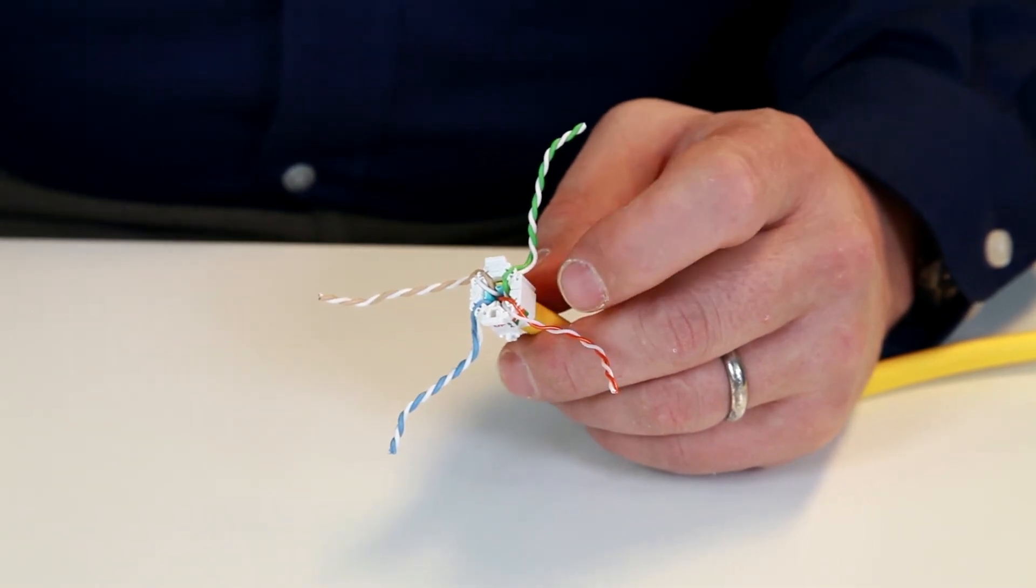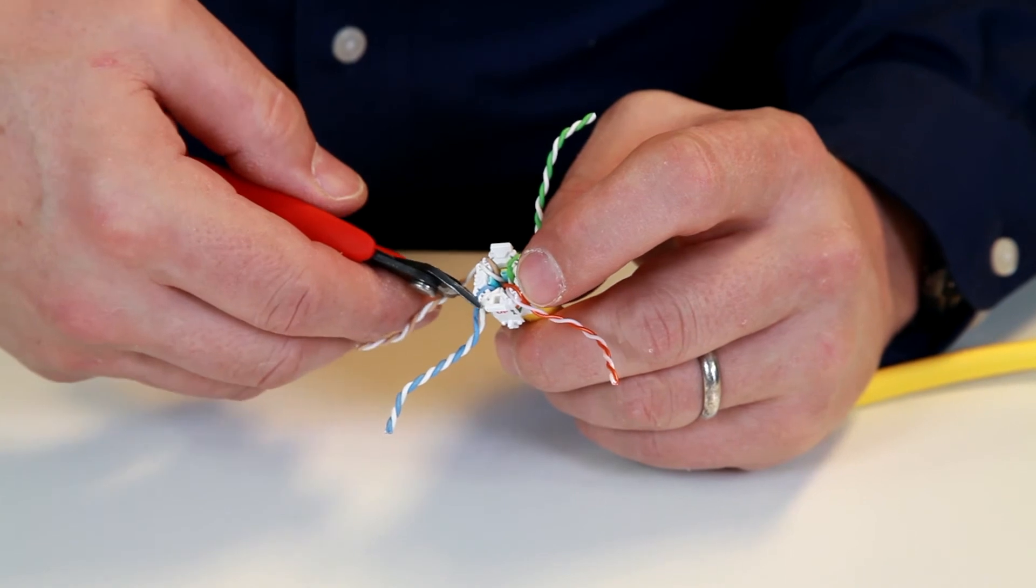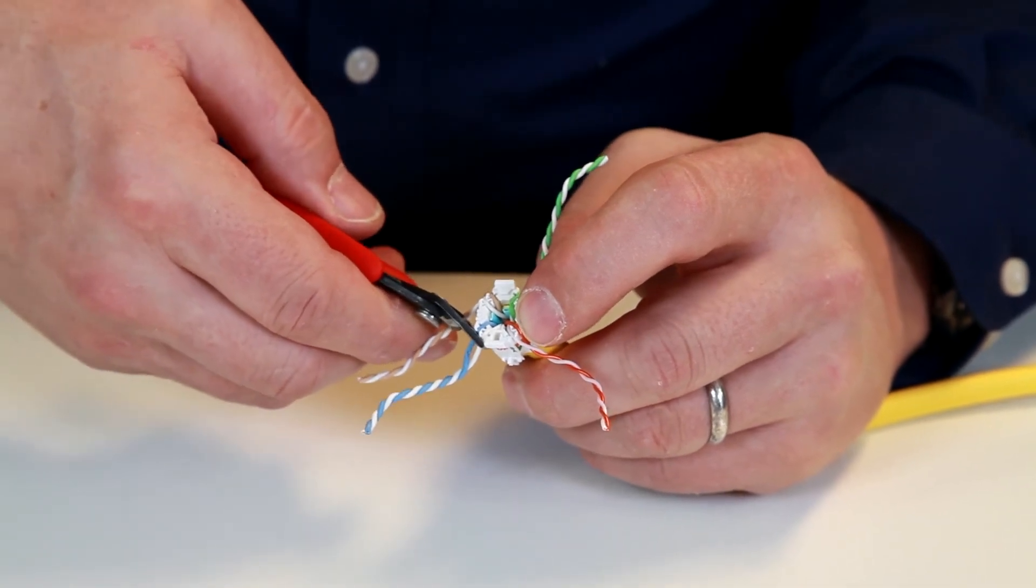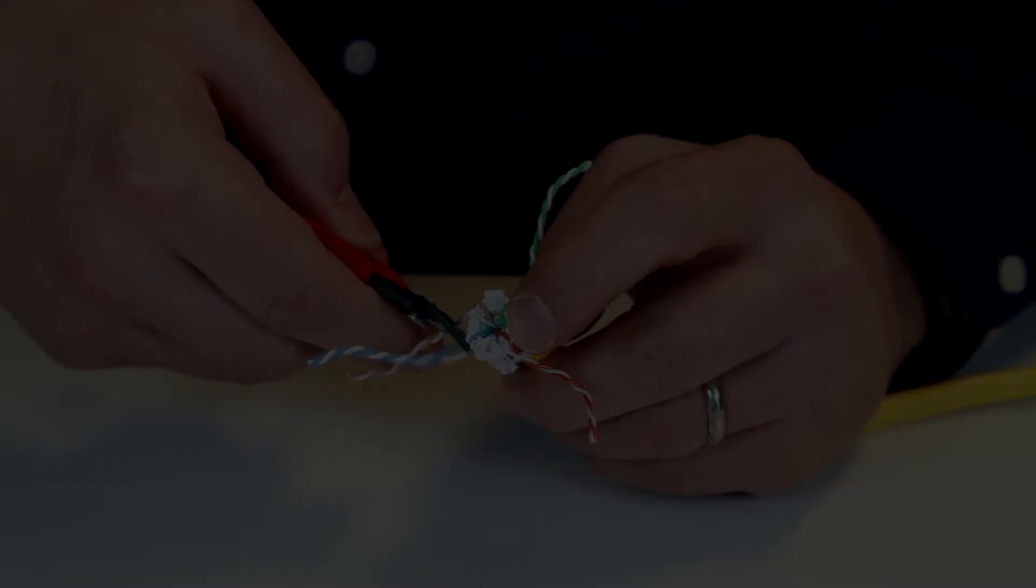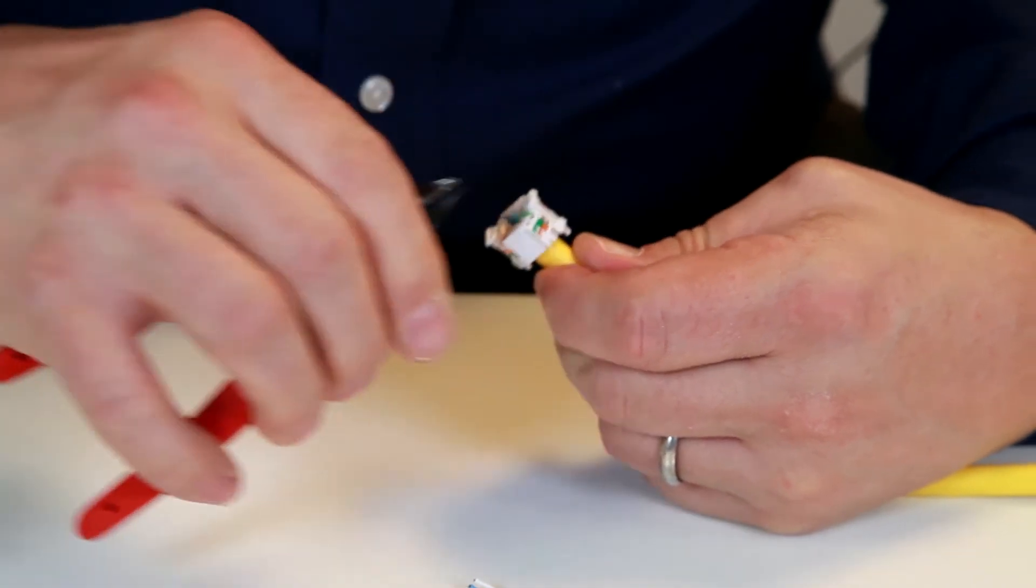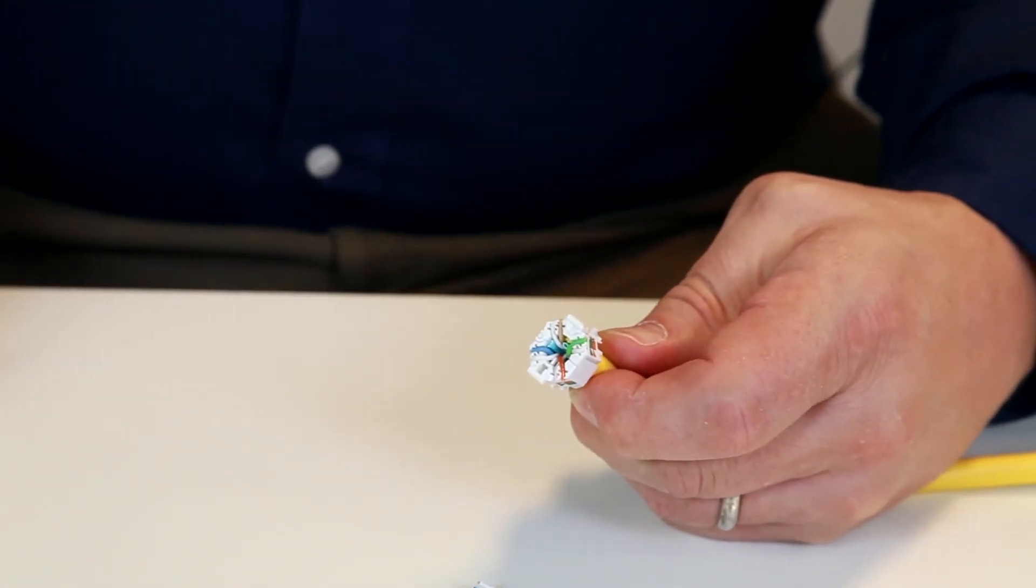So then we're going to take our flush cutter and cut these pairs flush with the side of the wire manager. It must be a flush cutter. There's all four pairs trimmed flush.